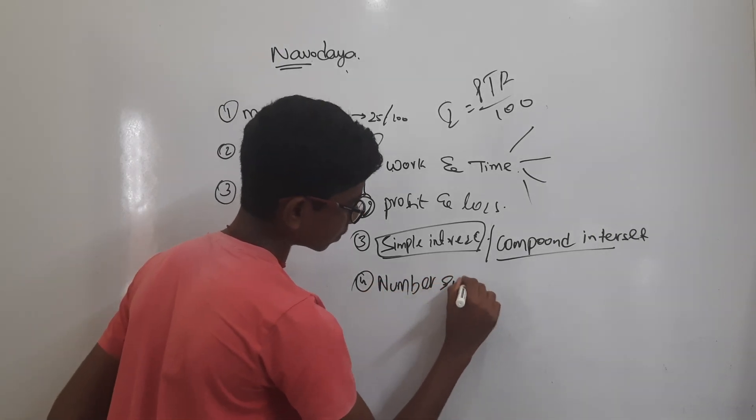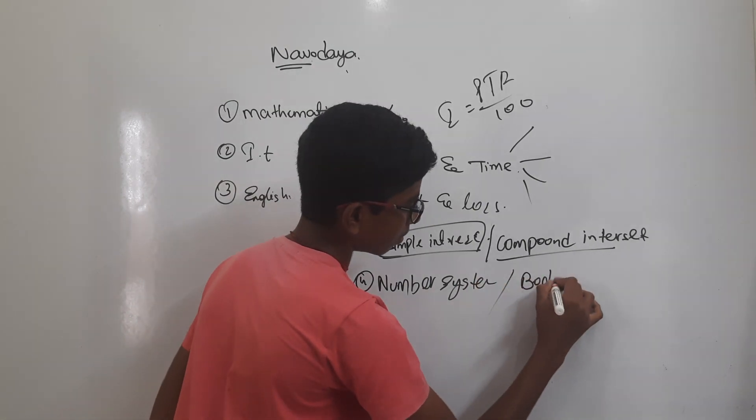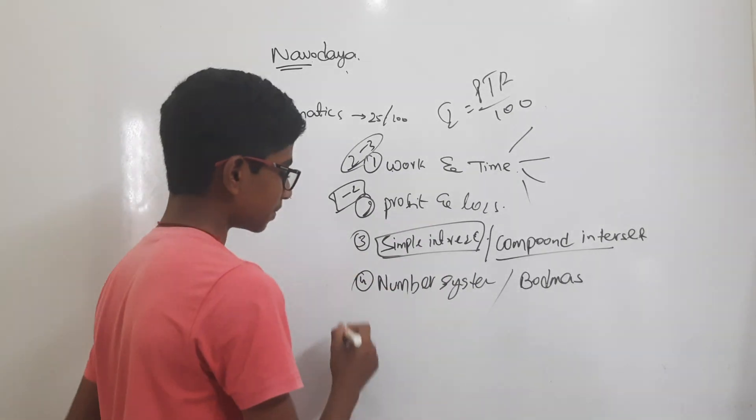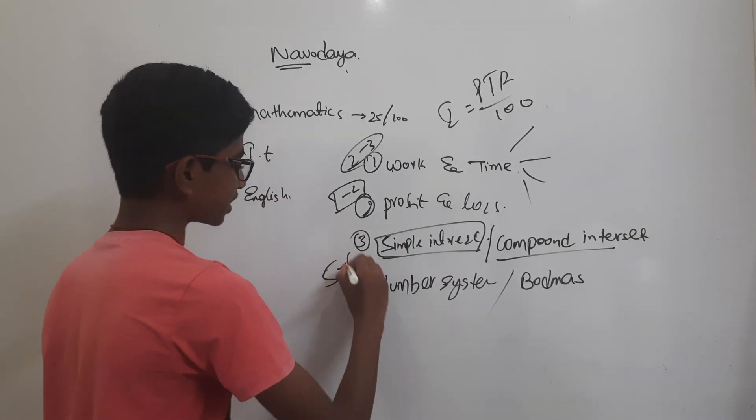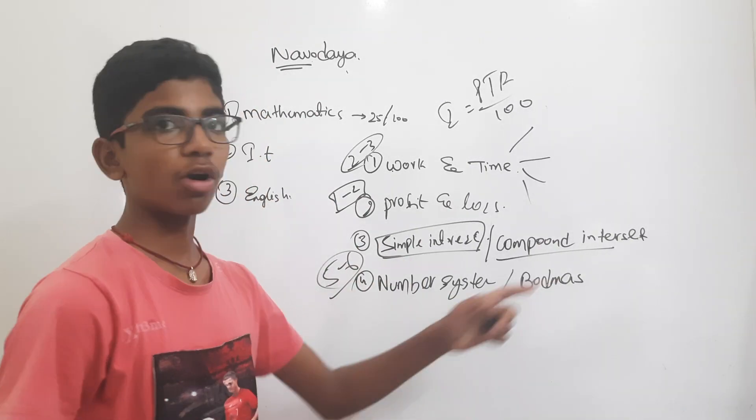Number System: In this Number System, board mass will also come. They will ask five to six bits. The majority will come from Number System, and board mass is also very important.